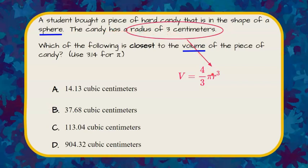So I'm going to replace R with 3. Rewriting this it's 4 thirds. They told me to use 3.14 for pi, replacing pi with 3.14 and multiply it by 3 cubed.